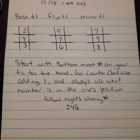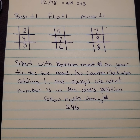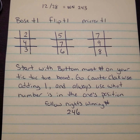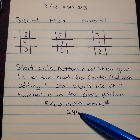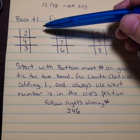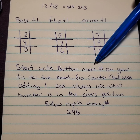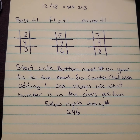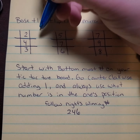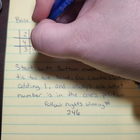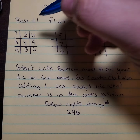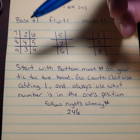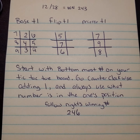We're going to use a base tic-tac-toe. Again, December 28th is the winning number — 243. That's your base number, the number that won here in the state of Mississippi that night. The following night's winning number was 246. What we're going to do is take that 243 and, starting with the bottom-most number on your tic-tac-toe board, you go counterclockwise — the reverse of a clock — adding 1 each time, always using what's in the 1's position. So starting with 3, you go 4, 5, 6, 7, 8, 9. That is your base +1 tic-tac-toe. The following night's number is 246, and you're looking for that inside the tic-tac-toe to help figure out what the following night's numbers are going to be.